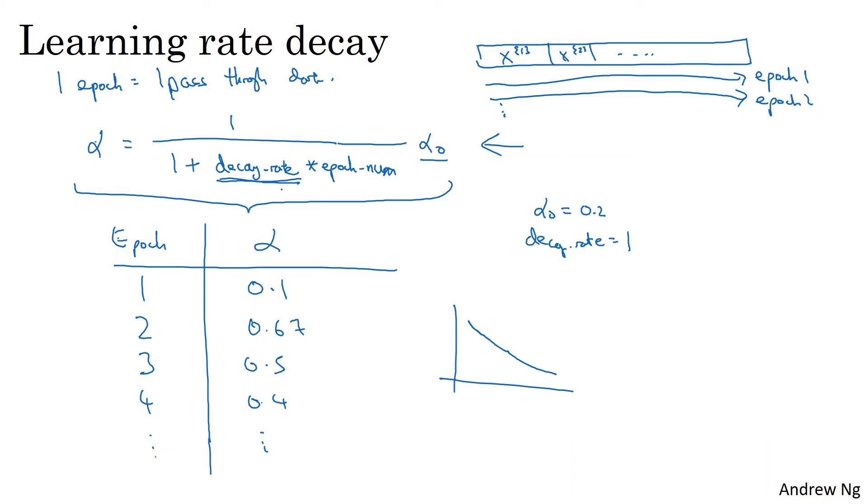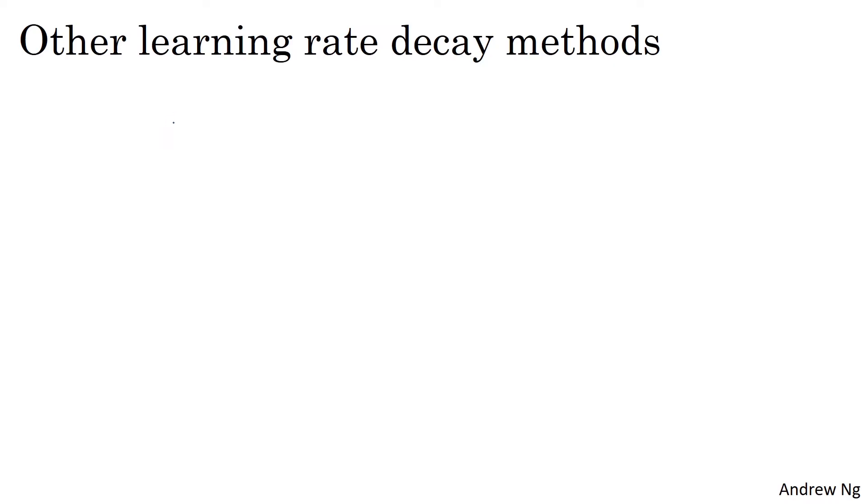Other than this formula for learning rate decay, there are a few other ways that people use. For example, this is called exponential decay where alpha is equal to some number less than one, such as 0.95 times epoch num times alpha zero. So this will exponentially quickly decay your learning rate.